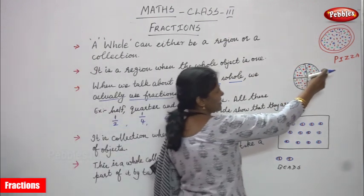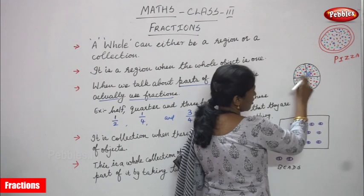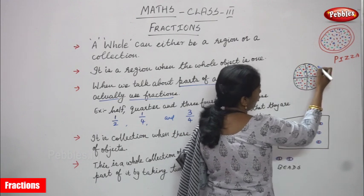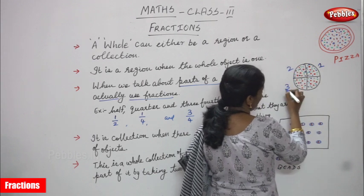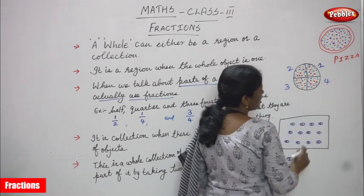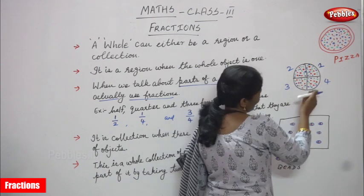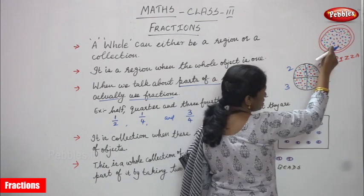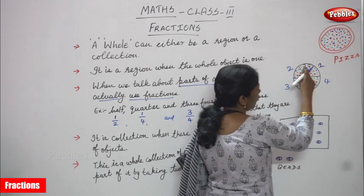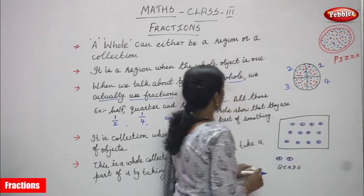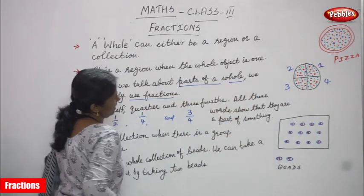So this is a whole pizza. I cut it into four equal parts — this is the first part, this is the second, this is the third, and this is the fourth. So I cut into four equal parts.